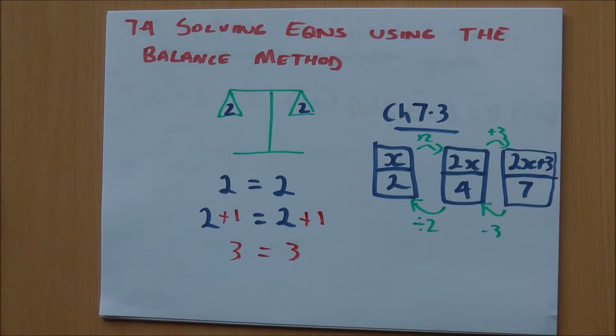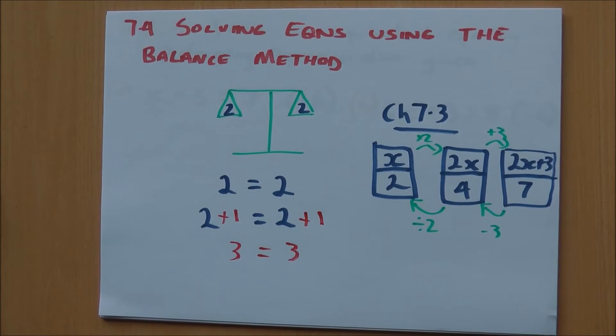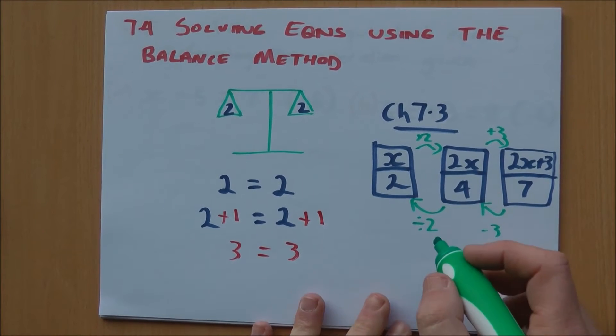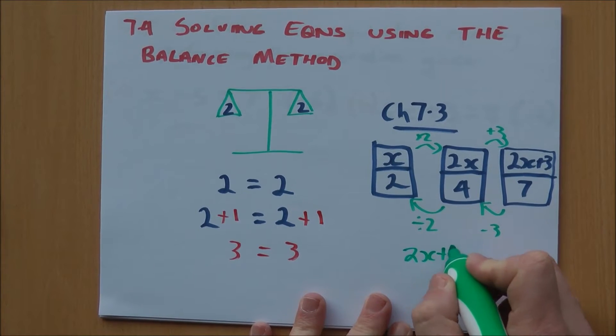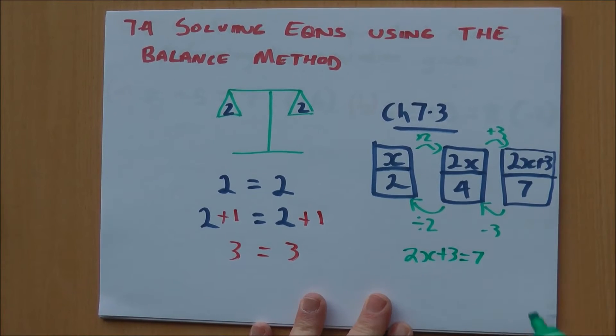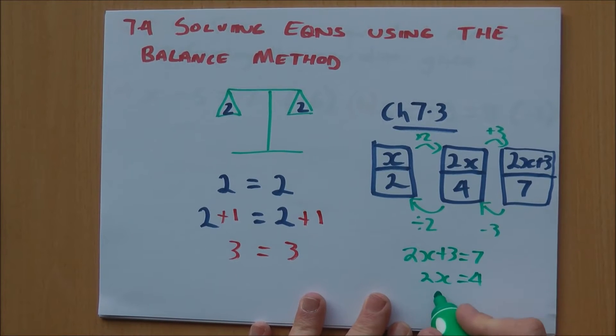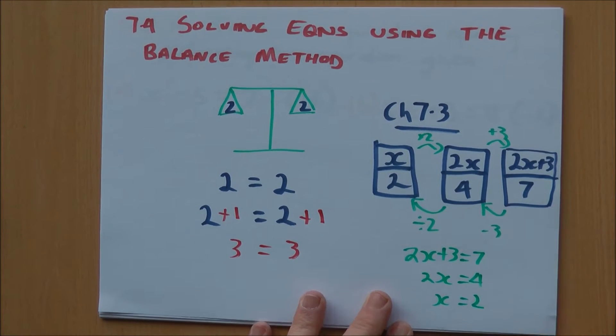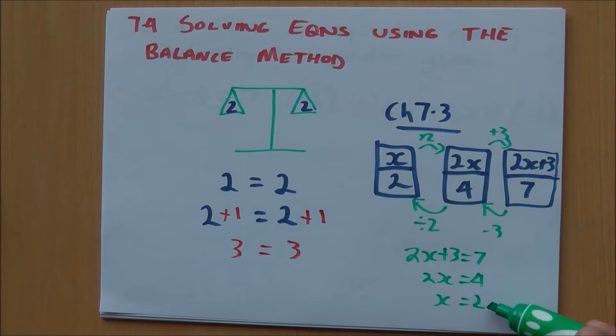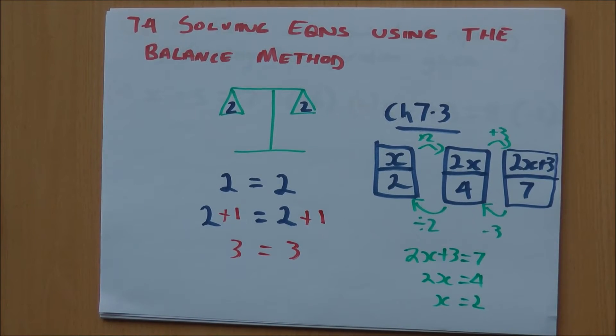Whereas in the last section, we were dealing with the backtracking method and the boxes and flowcharts like this. The top bit equals the bottom bit. 2x plus 3 equals 7, 2x equals 4. We're going to look at the mathematics behind how we end up with a sequence like that.